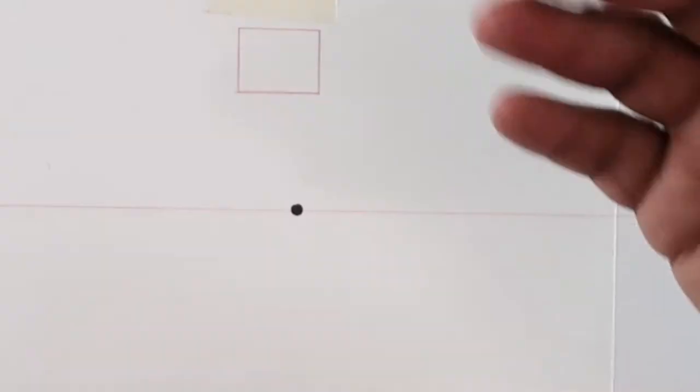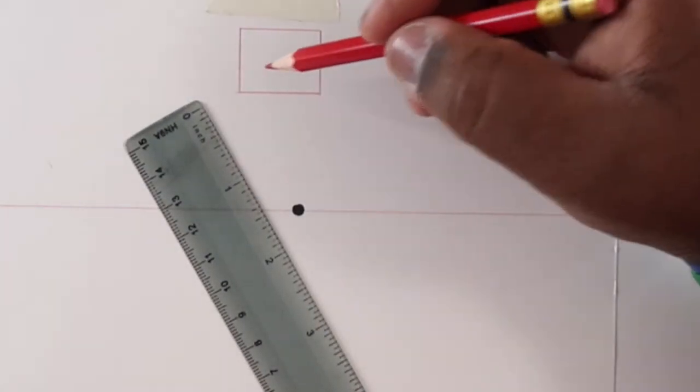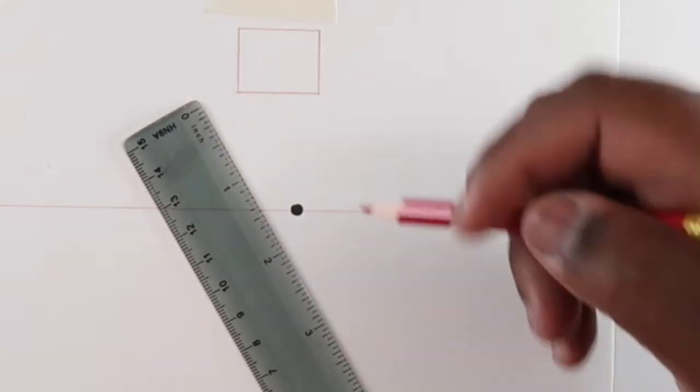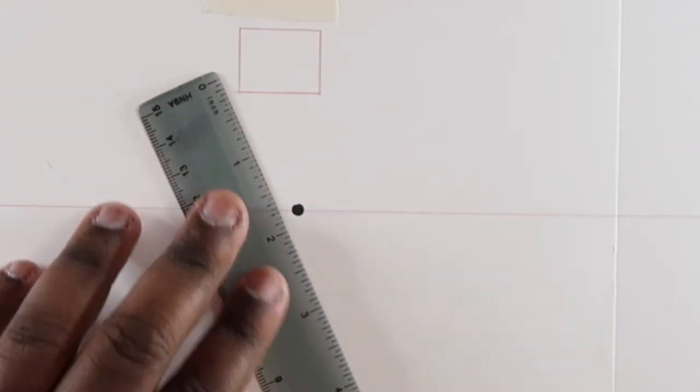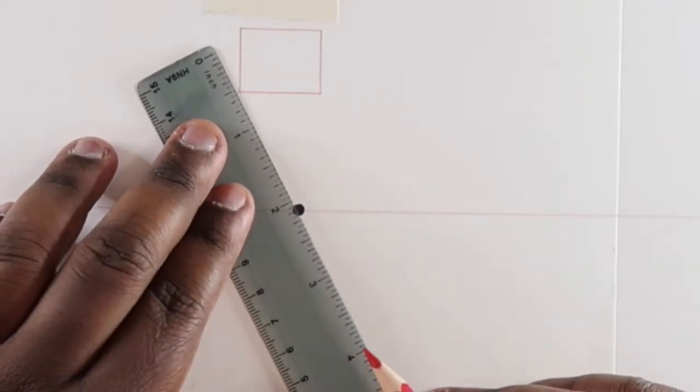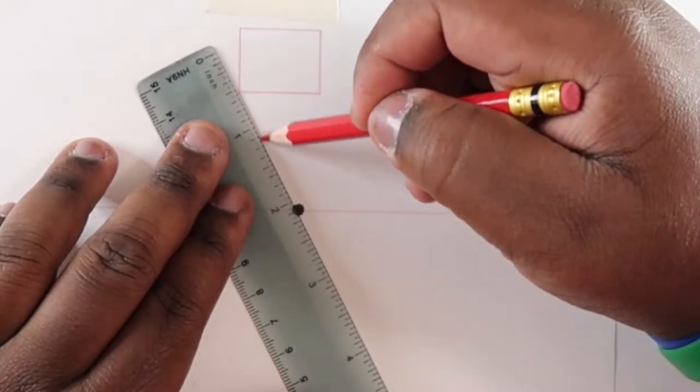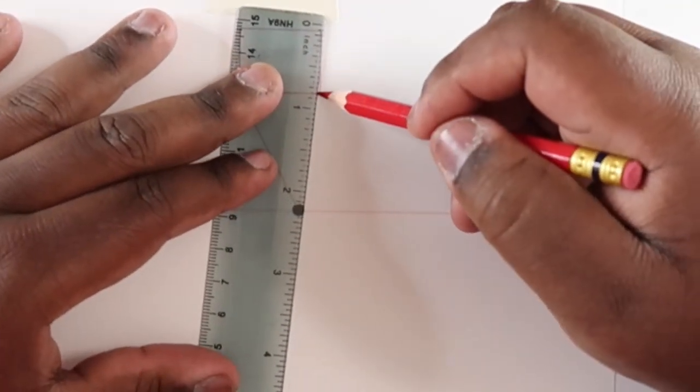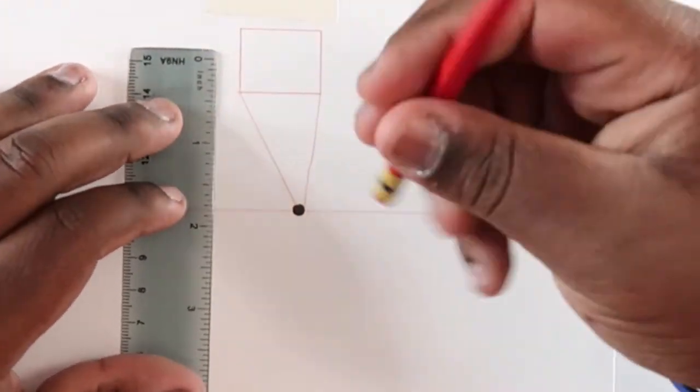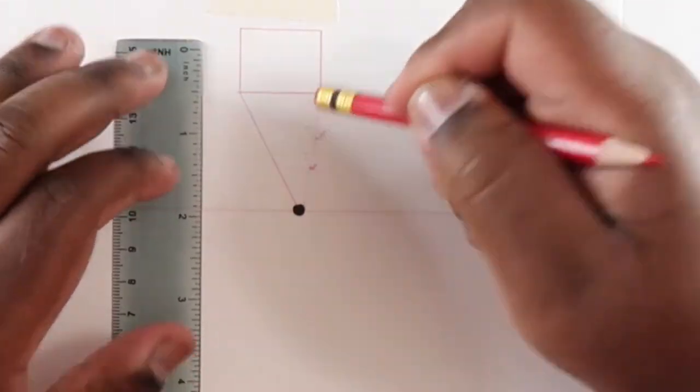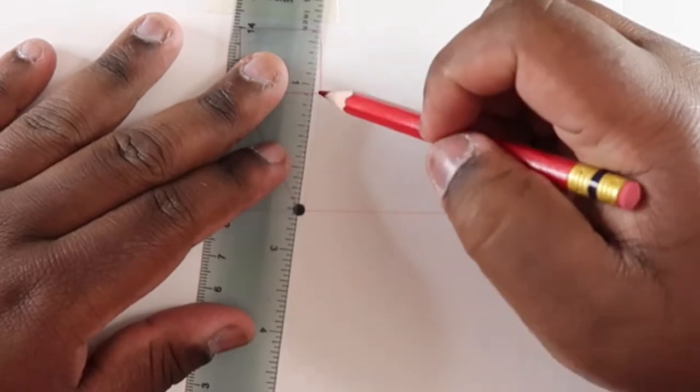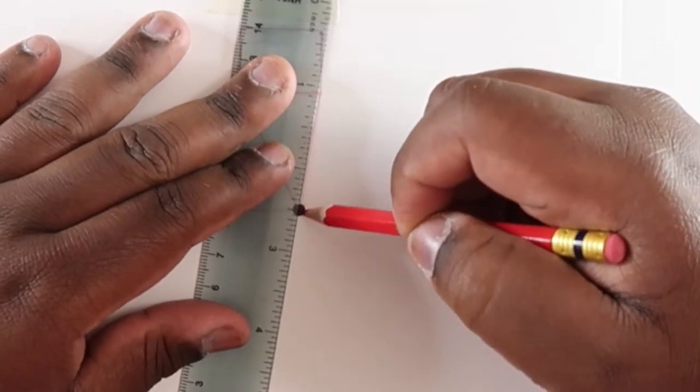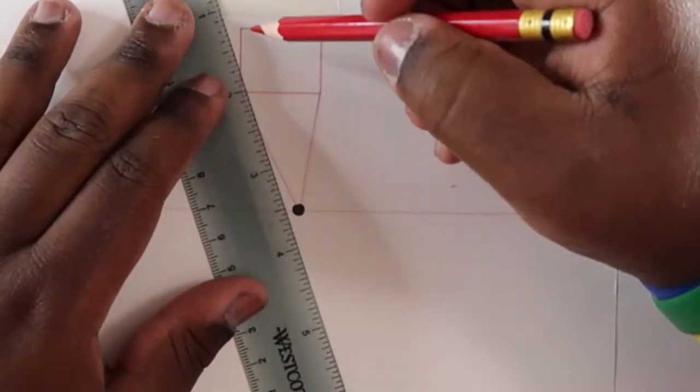So, now that we got our square drawn, we're going to take each corner of this square and connect it to our vanishing point. So, that corner.